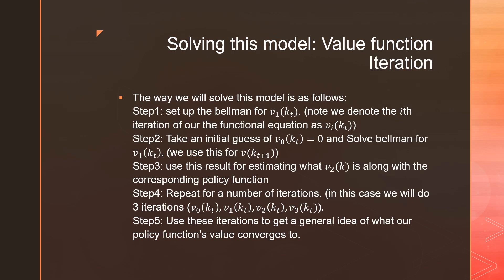So as I said in the beginning, we're going to solve this model using value function iteration. And I just wrote down a couple of general steps for how we do that. So step number one is that we're going to set up the Bellman equation for v₁(kₜ). That means our first iteration of our value function, where we're going to denote this little subscript under v as the number of iterations.